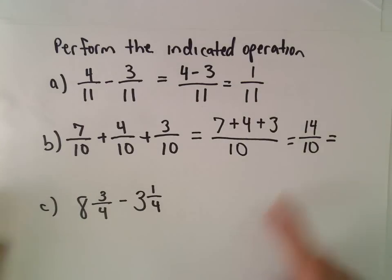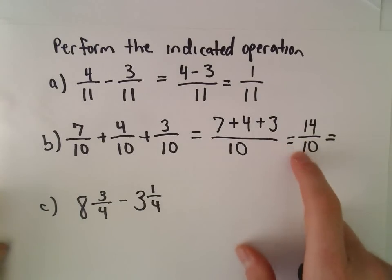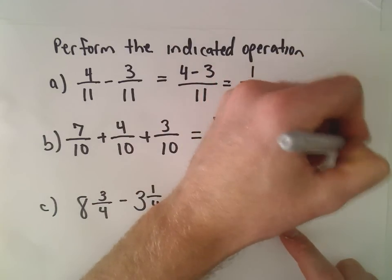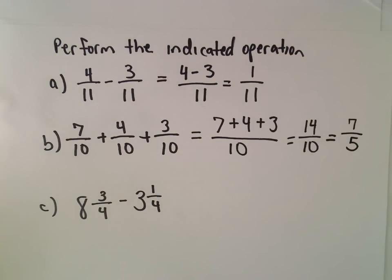And I can reduce that so I'm going to. They're both even. So if we divide top and bottom by 2, that'll leave us with 7/5. And I'm going to leave it as a fraction, not write it as a mixed number.